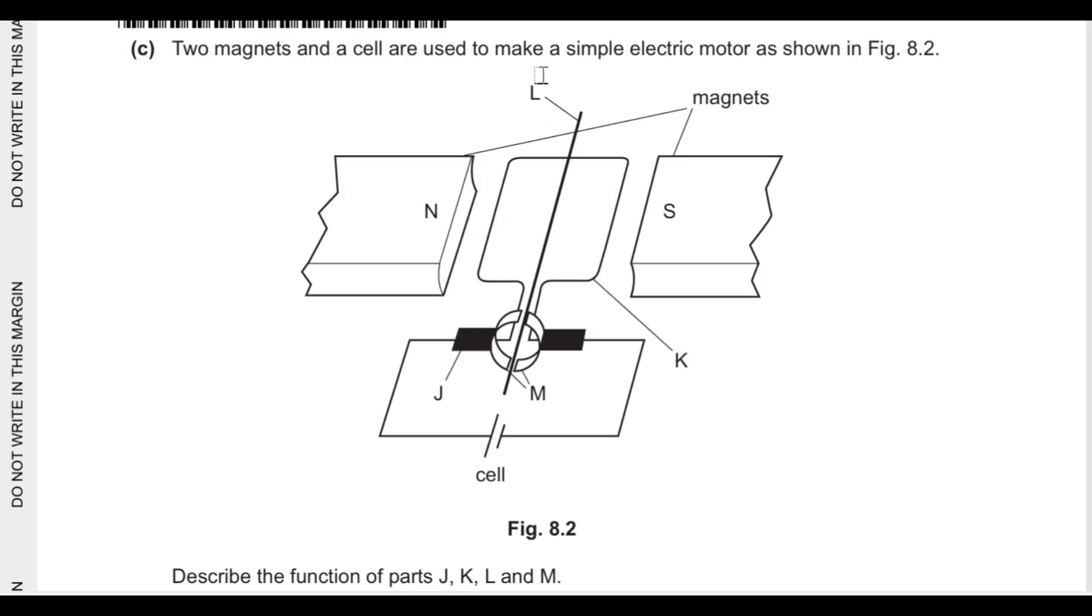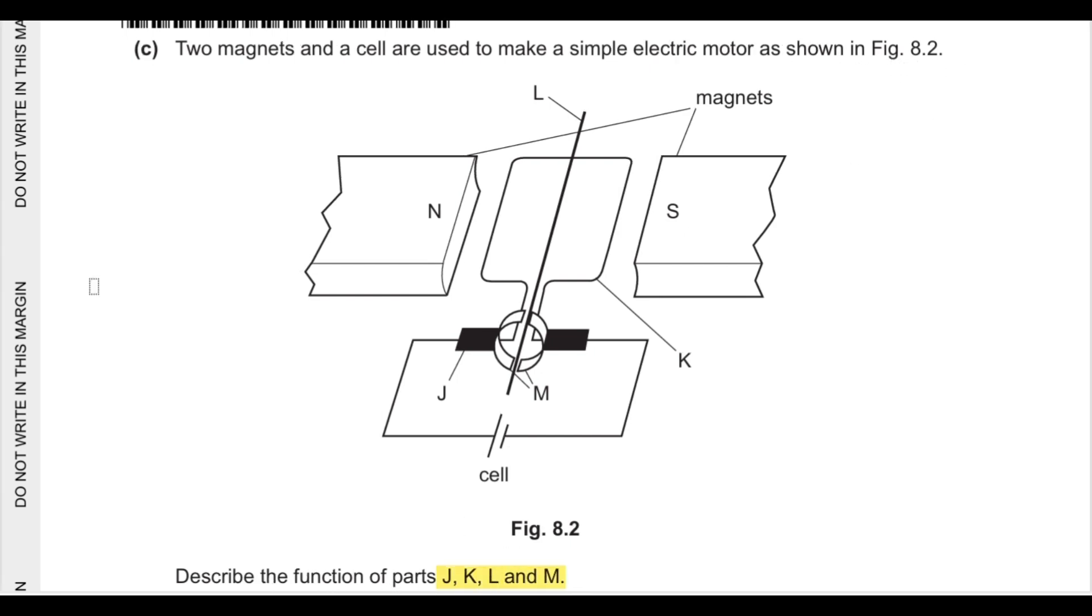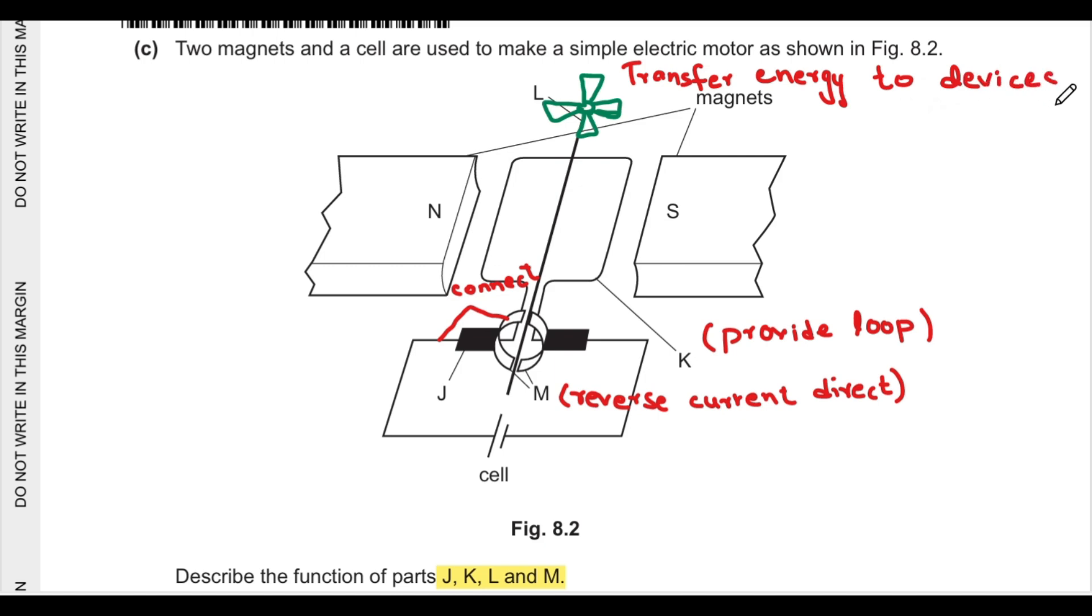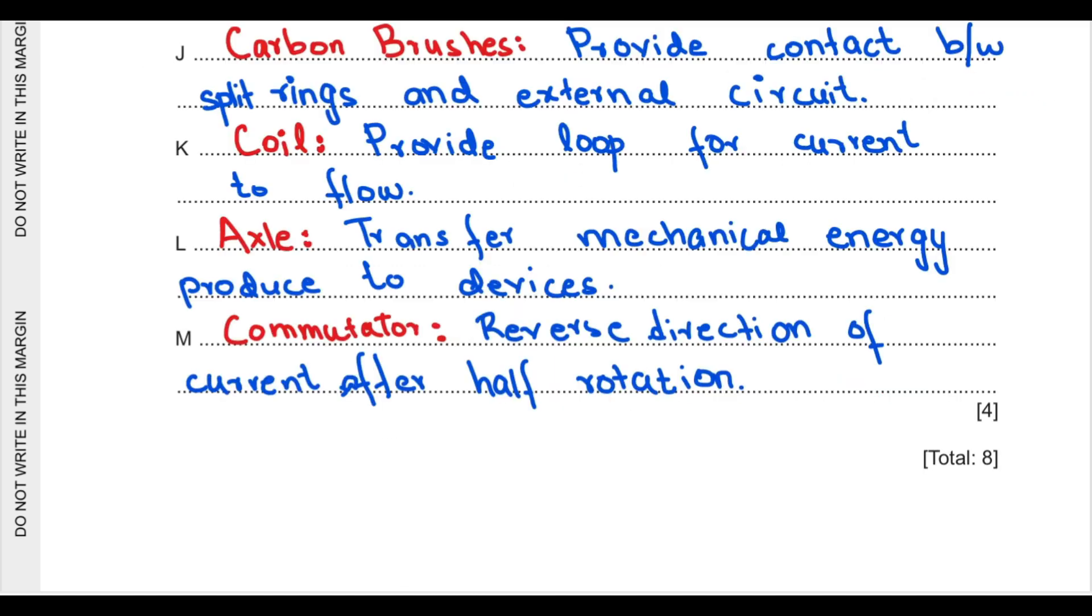Part C says two magnets and a cell are used to make a simple electrical motor. In figure 8.2 describe the function of J, K, L, and M. J is helping to connect the split rings and the circuit. M is a split ring used to reverse the direction of current after every half cycle to keep the coil rotating. K is a coil that provides the loop for the current or completes the circuit. L is an axle that helps to transfer the energy produced in the motor to the devices where it is being used.